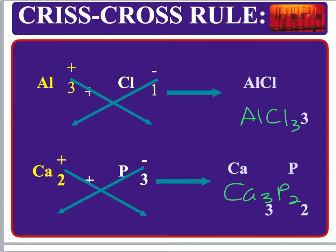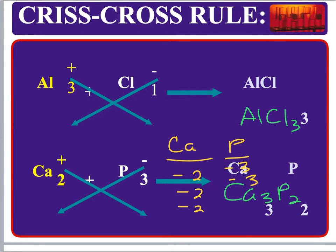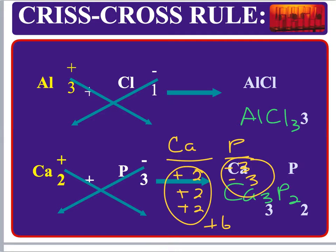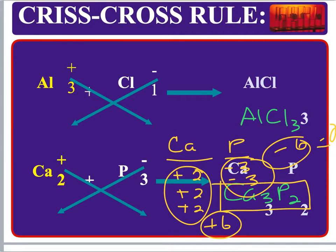Here are the rewritten examples. Aluminum has a 3+ charge and chlorine has a 1− charge — we just crisscross. Another example: calcium has a 2+ charge and phosphide (phosphorus ion) has a 3− charge. Crisscrossing: the 3 drops down as calcium's subscript, the 2 drops as phosphorus's subscript. Checking: three calcium ions at 2+ gives +6; two phosphide ions at 3− gives −6 — they cancel out, giving a neutral compound Ca₃P₂.